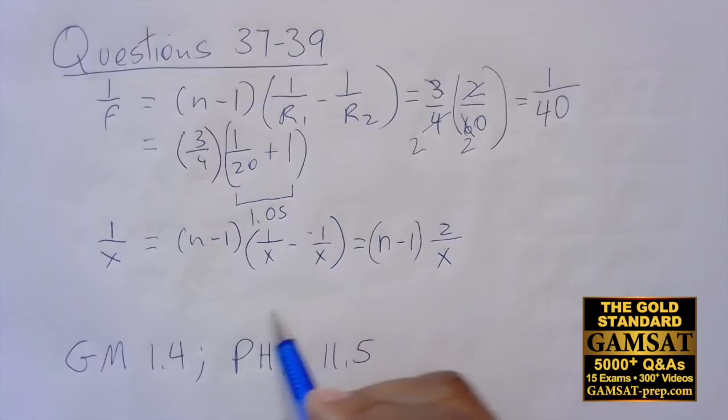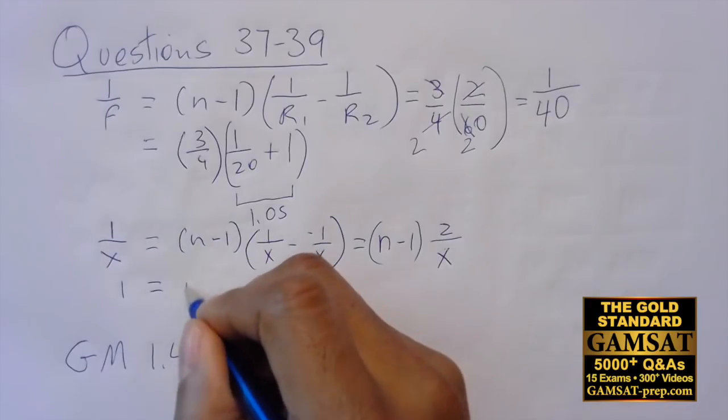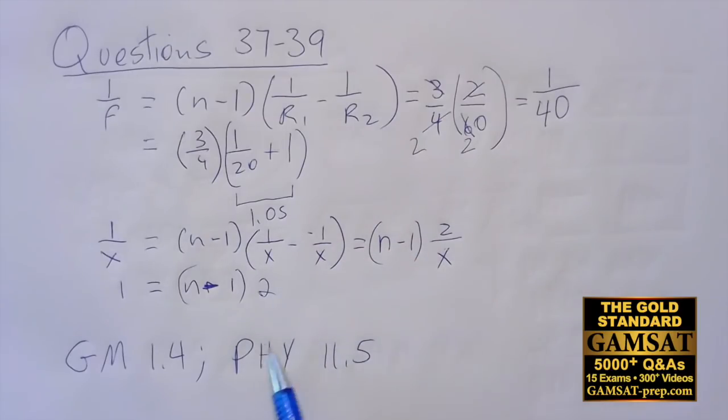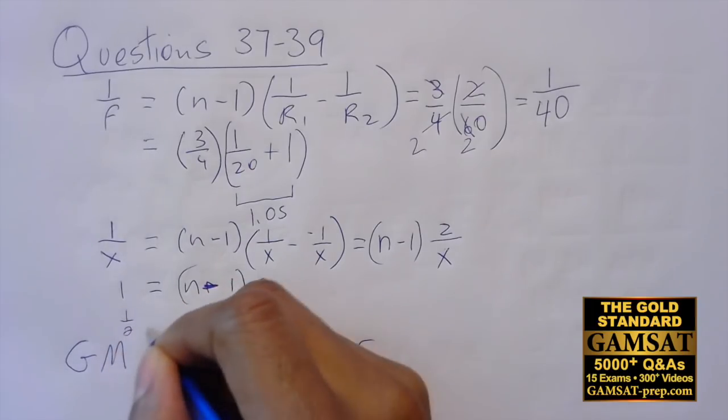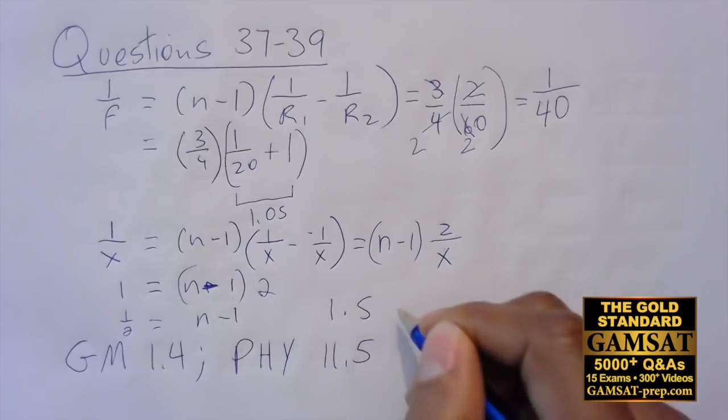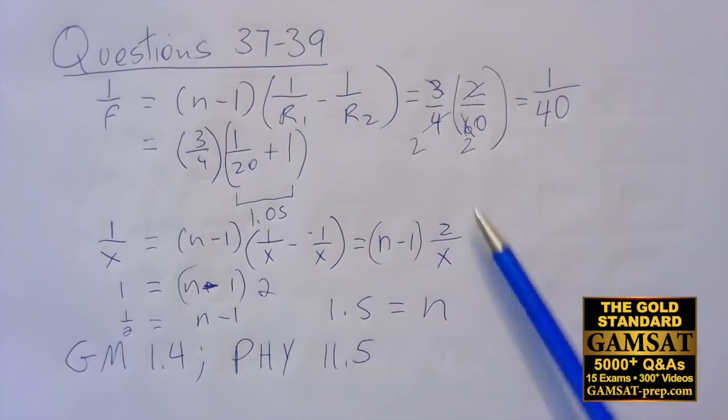Now I'll just multiply both sides by x. If I multiply this side by x, x cancels, I multiply this side by x, x cancels. So really all I'm left with is that the number 1 is equal to n minus 1 times the number 2. So then I divide both sides by 2 and I have 1 half is equal to n minus 1, and then I add 1 to both sides, I get 1 and a half on the left side, so I have 1.5 is equal to n.